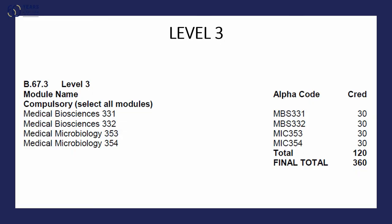At level three, there are four modules in total — two per semester — and there are no electives. You are fully in your department at this stage. In the first semester, students take MBS 331 and the microbiology module Mic 353. It is important to note that these modules have more weighting — the credit load is higher, at 30 units, instead of 15 or 20 as seen at previous levels.